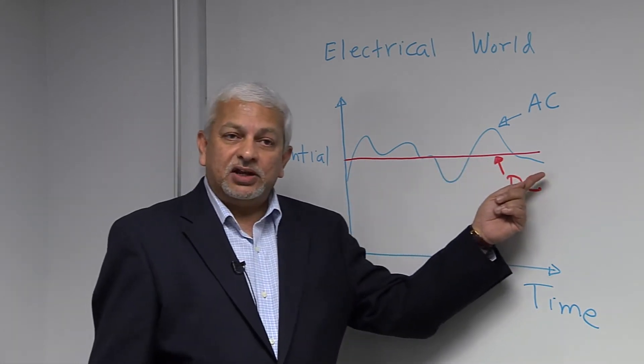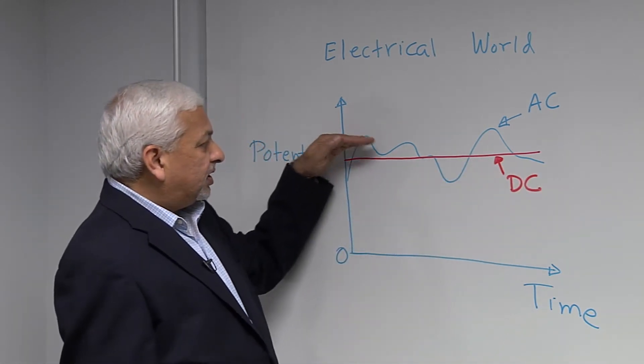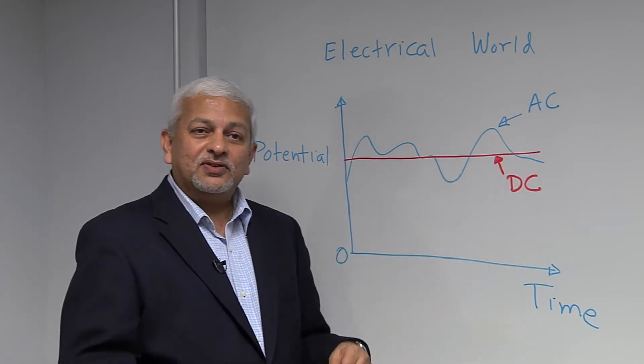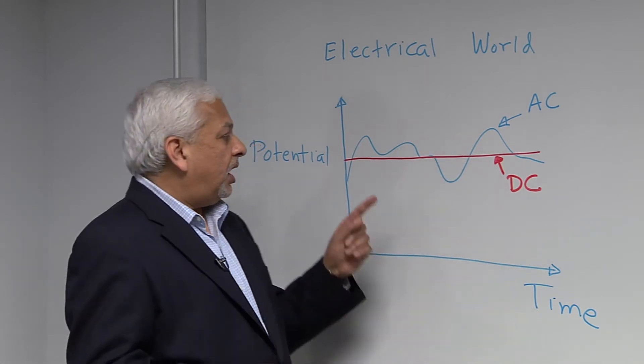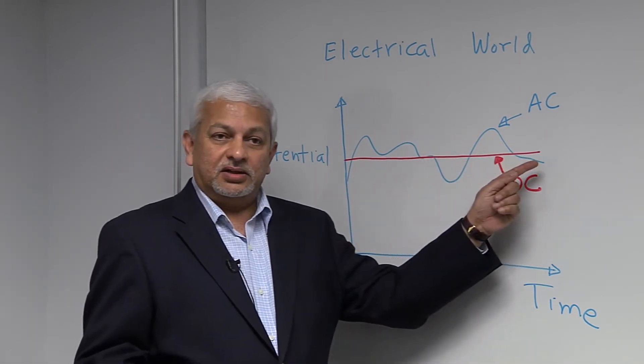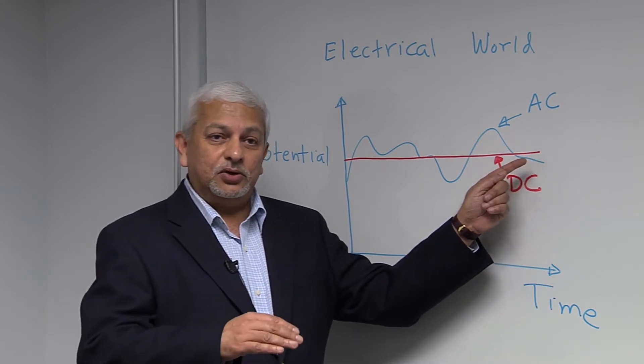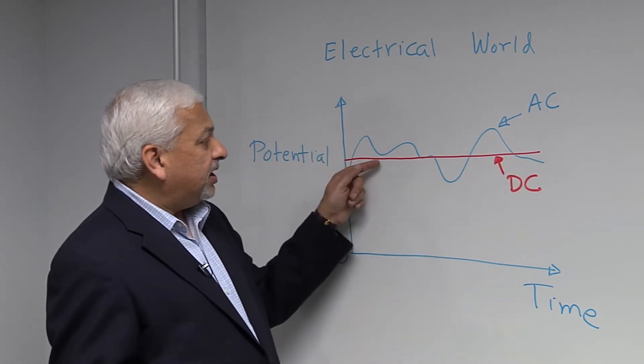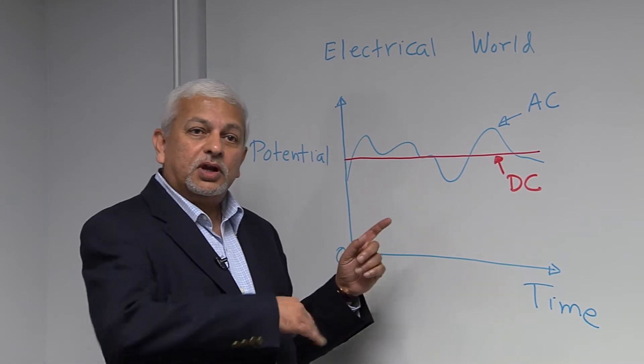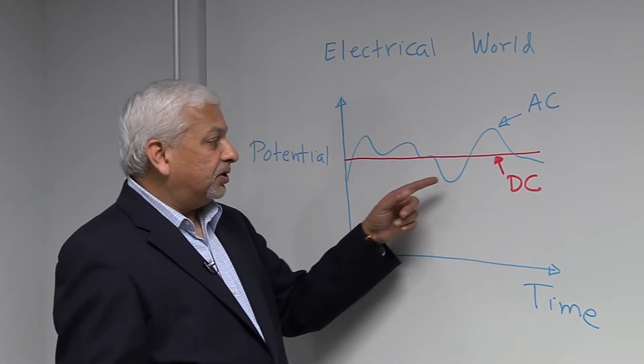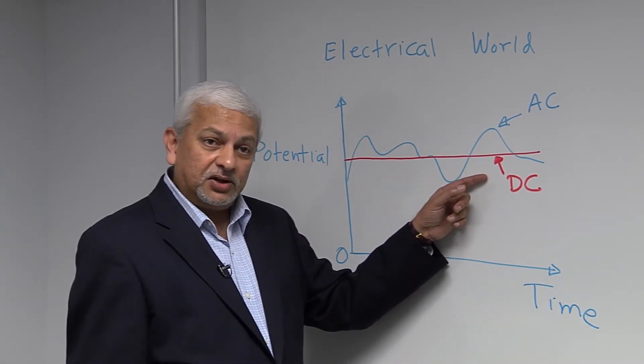Now, if I look at the average value of that, if you look at this blue signal and ask me what is its average value, I would say it is what this red line shows. That's the average value. So the alternating part, the AC part, is going up and down with respect to the DC part, which is the average value.